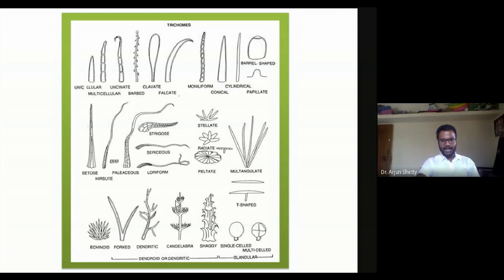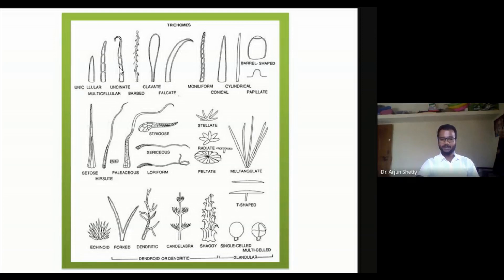Here we can see the candelabra type of trichome, the dendritic type, the equinoid type, and the peltate type of trichome. Based on different structures, we can see a single-celled knob-like structure and also the same knob-like structure in multicellular form. These are usually the glandular type and contain some glands with active biological compounds.